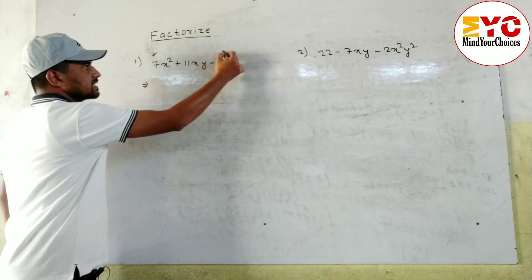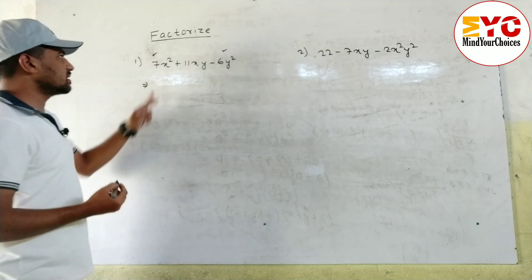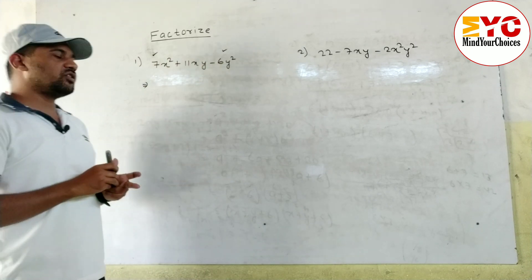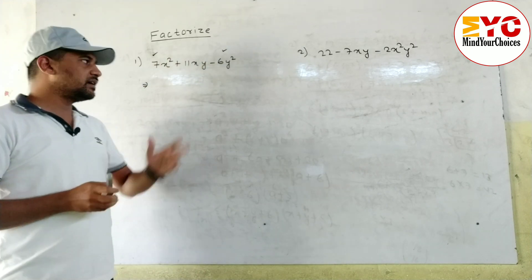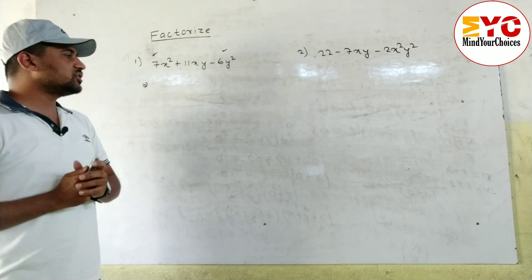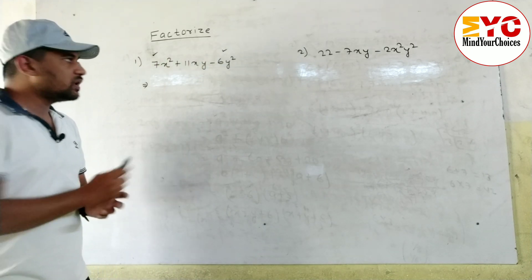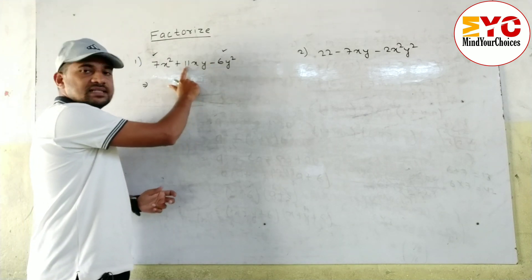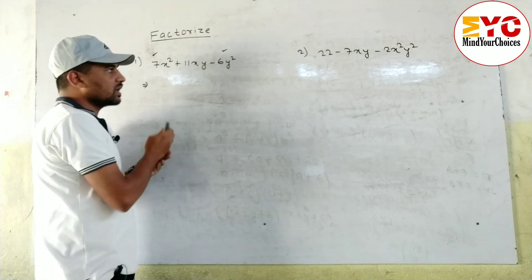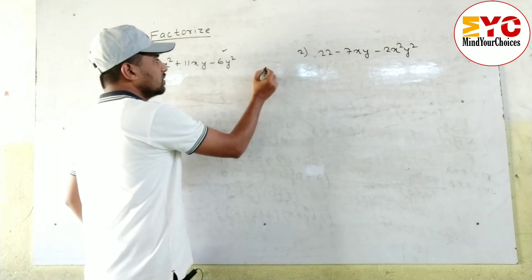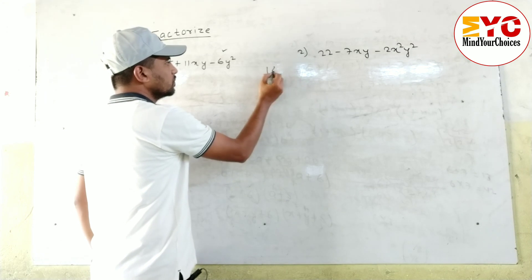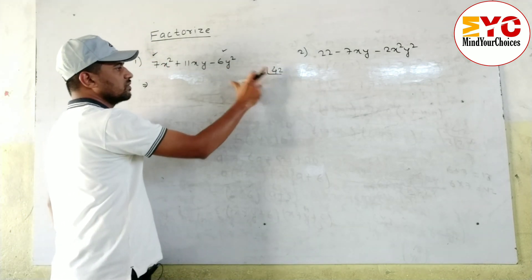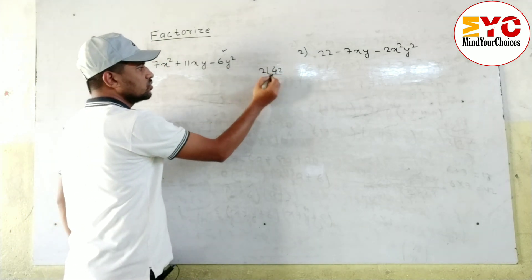When a question is in this form, we always have to multiply the first and last number. So 6 × 7 = 42. Now we have to find factors whose multiplication is 42 and whose difference (subtraction) is 11, because the middle sign is minus.